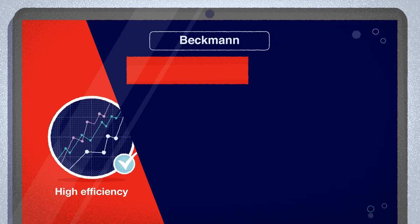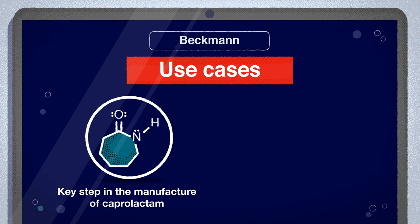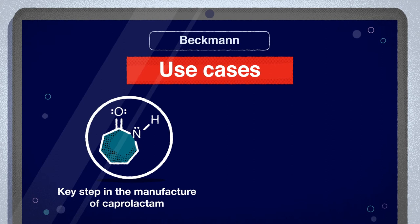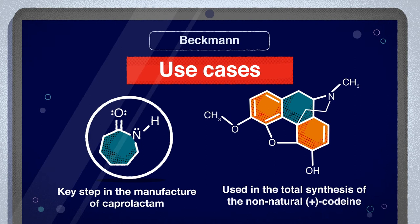The Beckmann Rearrangement is still important in industry today as a key step in the manufacture of caprolactam, a precursor to the synthesis of filaments and fibers such as nylon. The total synthesis of the non-natural codeine also utilized the Beckmann Rearrangement.